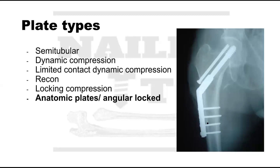Anatomical plates — or angular locking plates — are designed for specific anatomic parts of the body. Companies have specific plates for the distal tibia contoured to match most distal tibias, for distal radius fractures, for the hip, and for the distal humerus — with separate plates contoured for the medial and lateral sides. These are your anatomic plates.